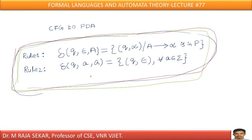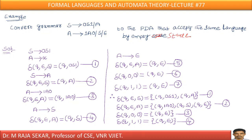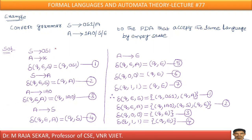Now we will try to apply this rule for one more simple problem. Convert the grammar — S goes to 0S1 or A; A goes to 1A0 or S or epsilon — to the PDA that accepts the same language by emptying stack. Just apply the rules from the previous slide.